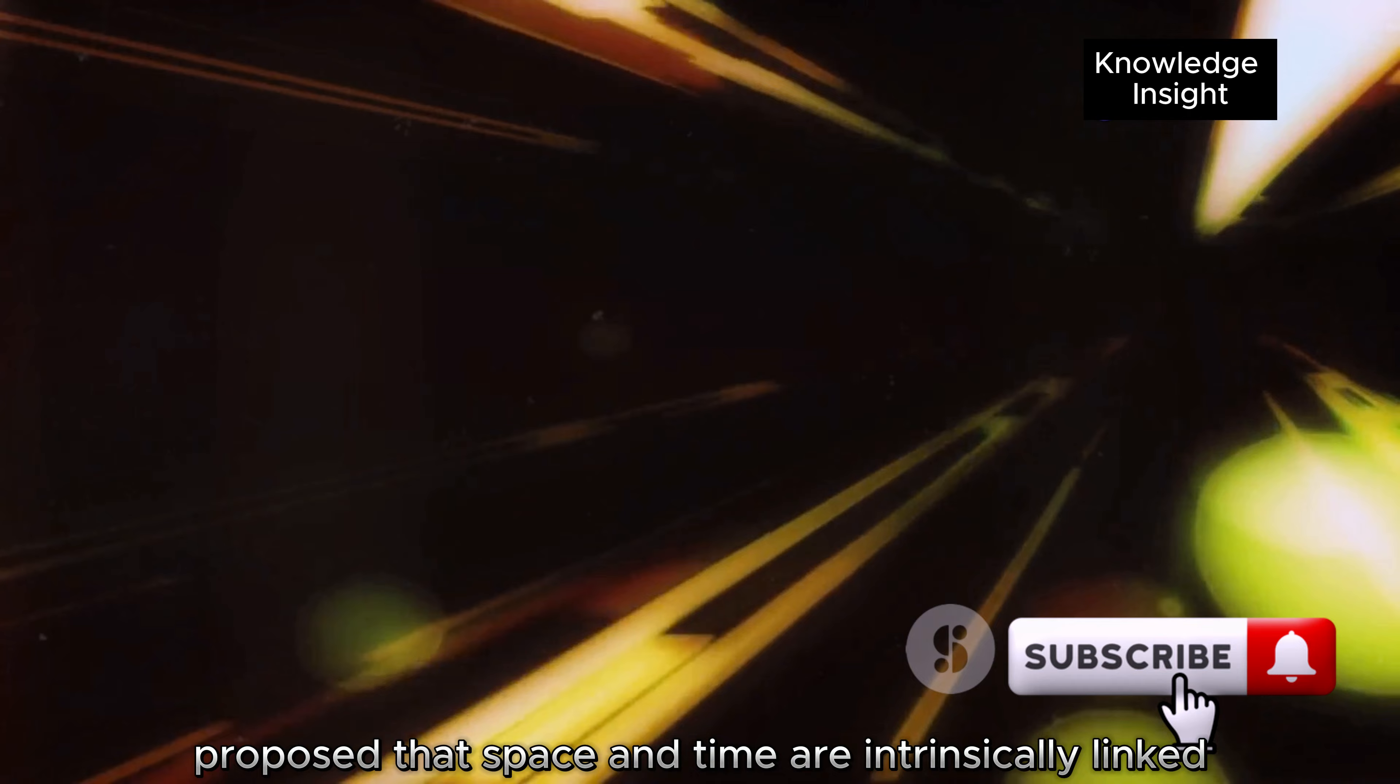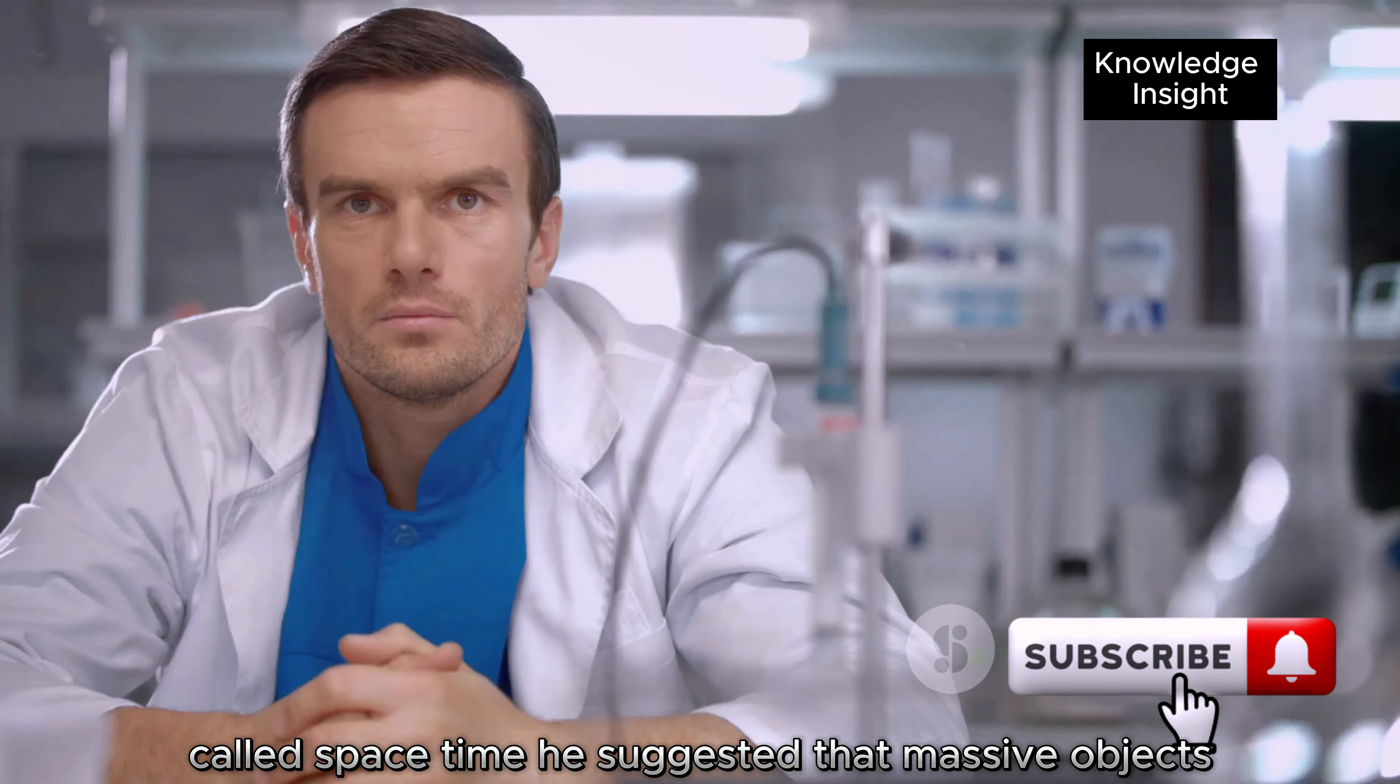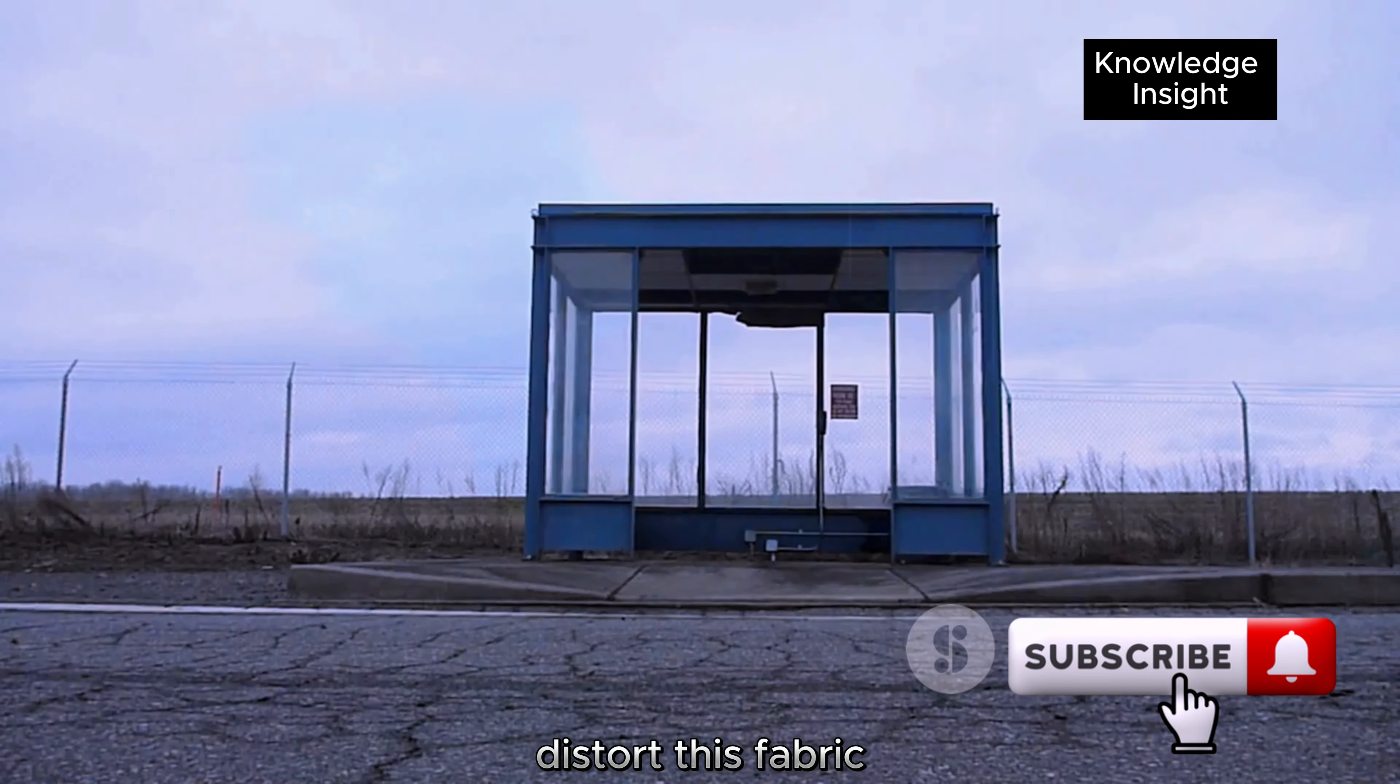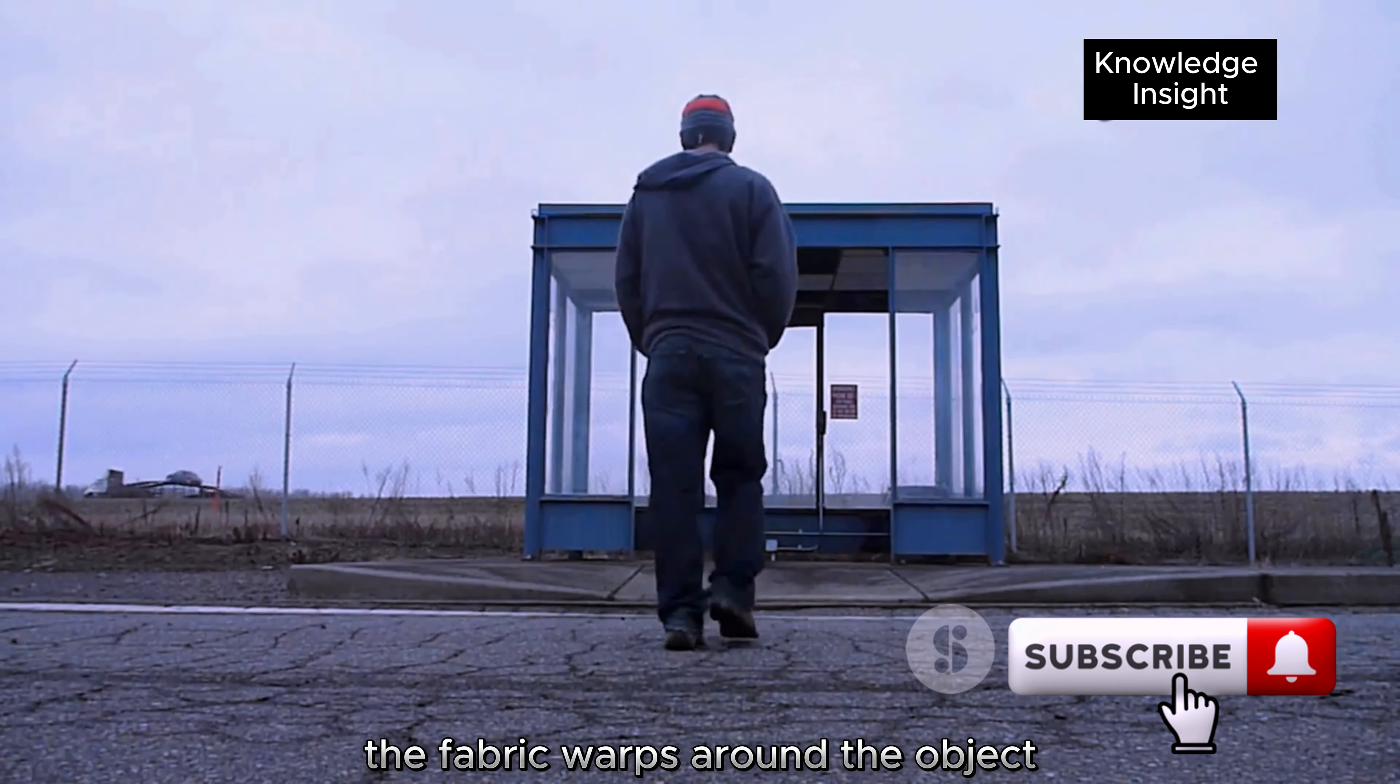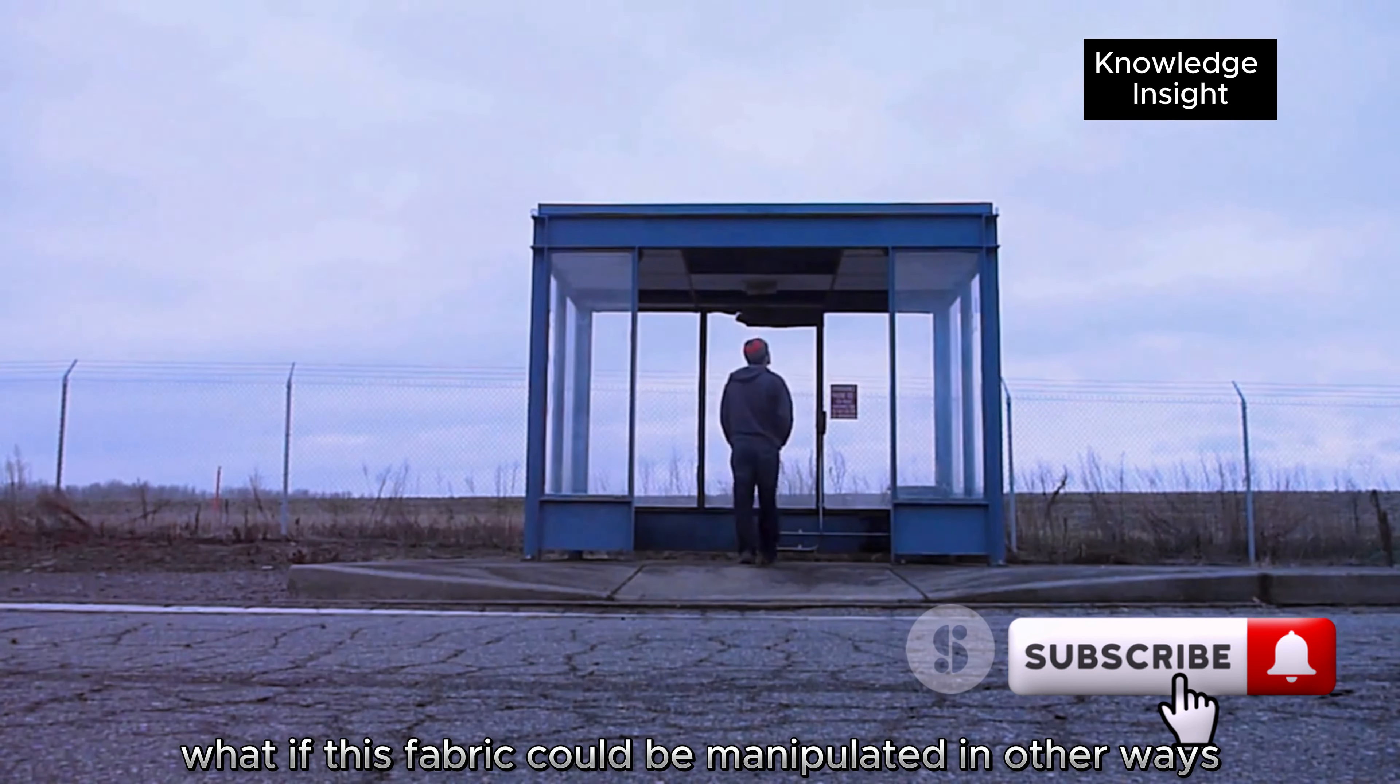Einstein proposed that space and time are intrinsically linked into a four-dimensional fabric called space-time. He suggested that massive objects such as planets and stars distort this fabric, creating what we perceive as gravity. Like a bowling ball placed on a trampoline, the fabric warps around the object, causing nearby objects to fall towards it. But what if this fabric could be manipulated in other ways?